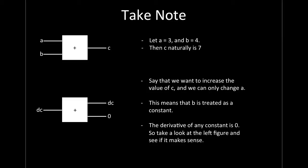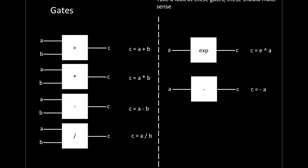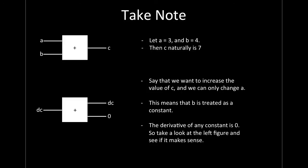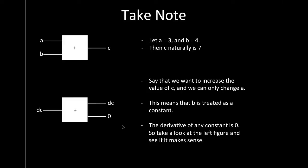We can only change A — B is treated as a constant. So the derivative for A's path is DC times 1, and for B it's 0, because the derivative of a constant is 0. Treating B as fixed — say the function is A plus 2 — the derivative with respect to A is 1, and the derivative with respect to the constant 2 is 0. Whenever you have a constant input, its derivative output is 0.